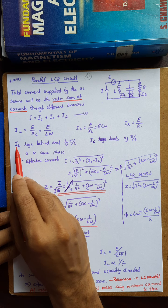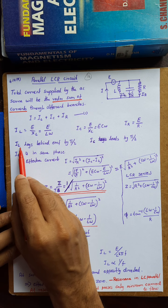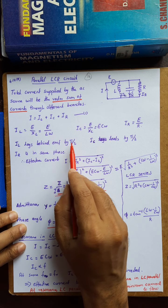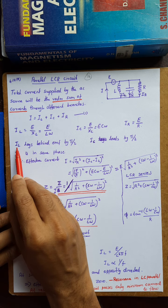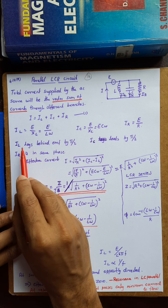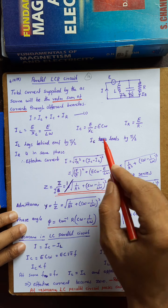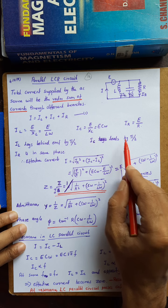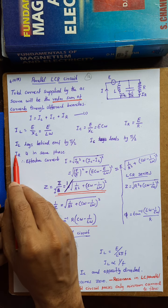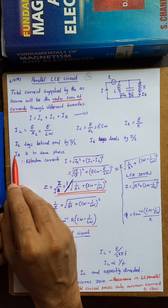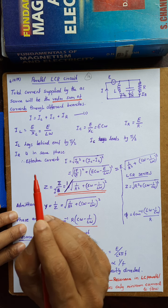Current through inductance IL lags behind the EMF by a phase difference of pi/2. Current through capacitance IC leads the EMF by a phase difference of pi/2. Current through resistance will be in phase with the applied EMF.